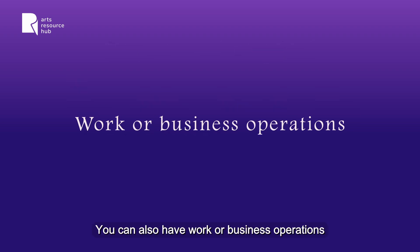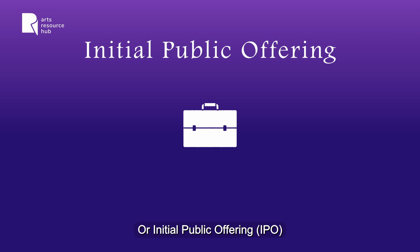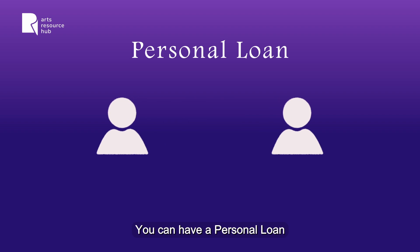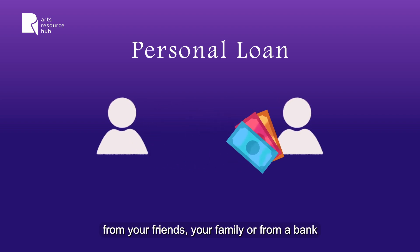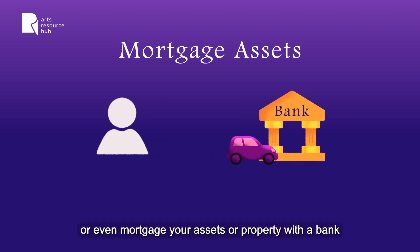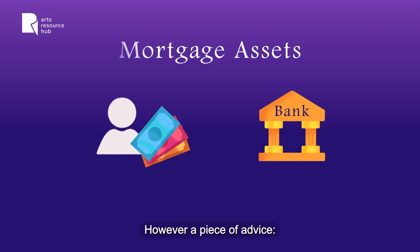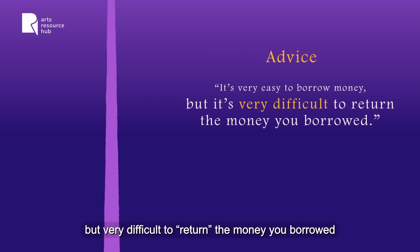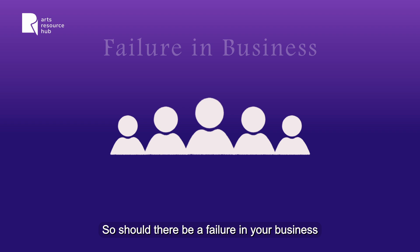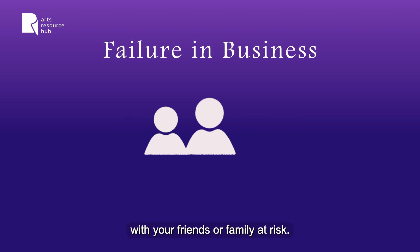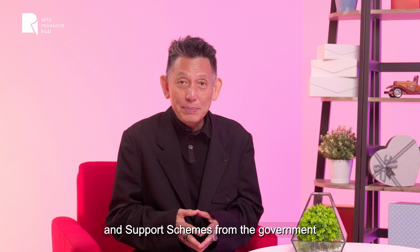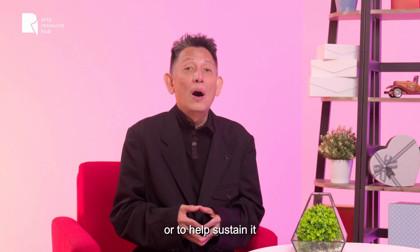You can also have work or business operations, or initial public offerings — IPO — which are shares offered by private corporations to the public. There are also other ways to finance your arts company. You can have a personal loan, borrow money from your friends, family, or from a bank, or even mortgage your assets or property with a bank to raise funds. However, a piece of advice: it is very easy to borrow money but very difficult to return it. Should there be a failure in your business, you are putting your relationship with your friends or family at risk.